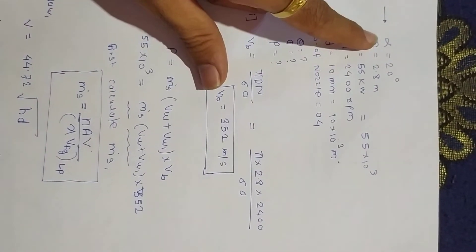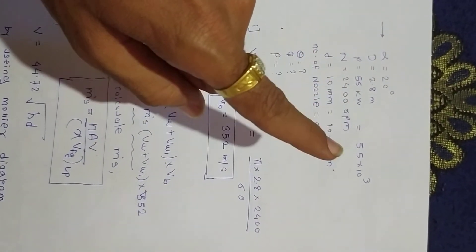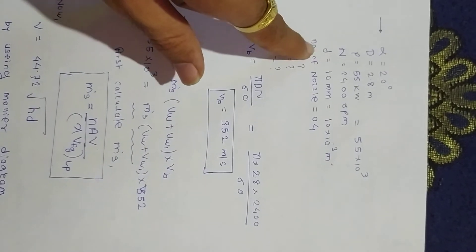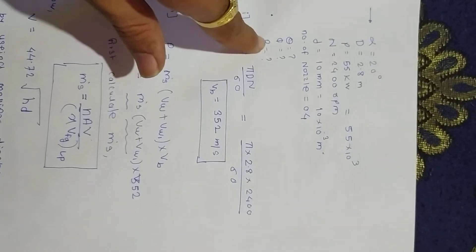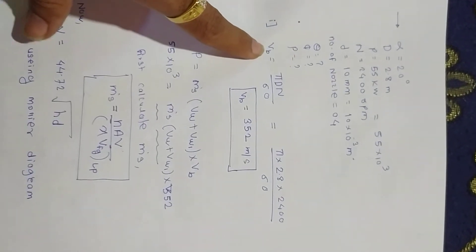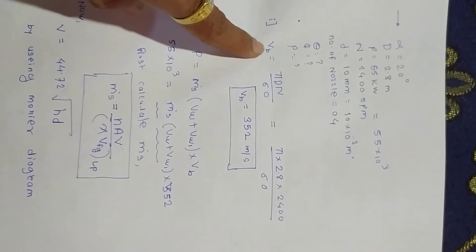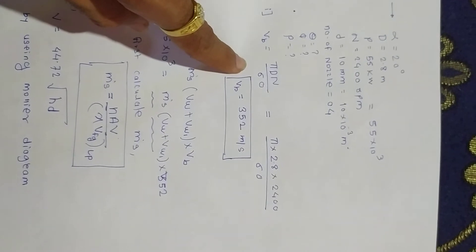The given data is: alpha, drum diameter, power in kilowatts (we take in watts), RPM, nozzle diameter D, number of nozzles. They ask for theta, phi, and power lost in friction. Now we calculate first VB.